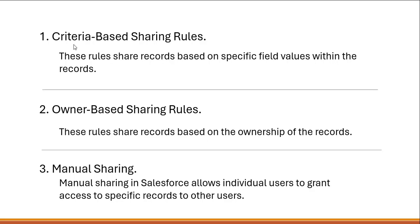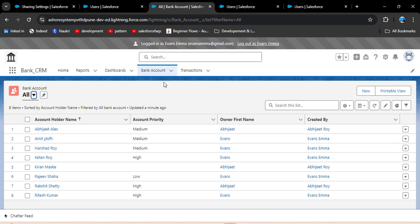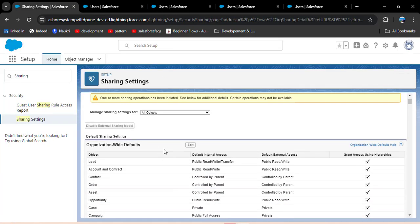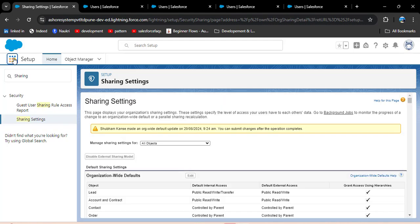Now we will see manual sharing. Even though we have criteria-based and owner-based sharing rules, manual sharing allows individual users to grant access to a specific record to other users. In criteria-based and owner-based sharing rules we share records with a group or set of groups, but in manual sharing we can share just one record with another user. To enable manual sharing in the org, click on the edit button, scroll down, check the 'manual user record sharing' checkbox, and then click save. Now go to the App Launcher.